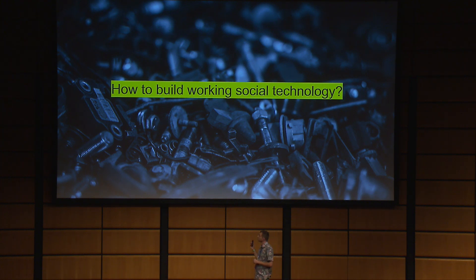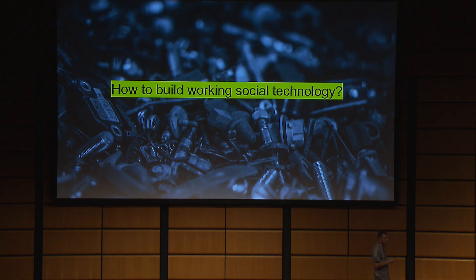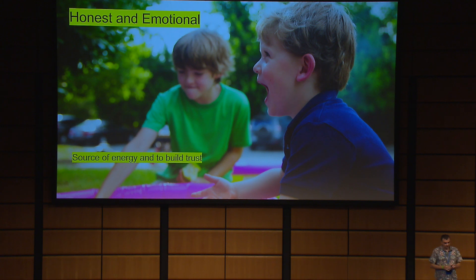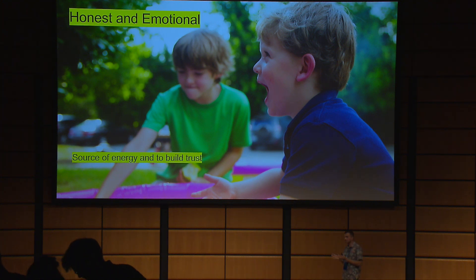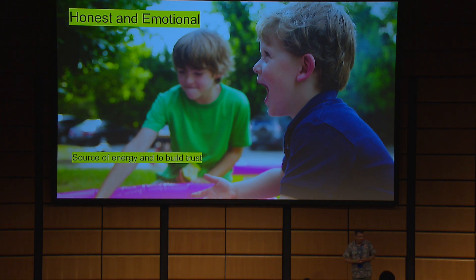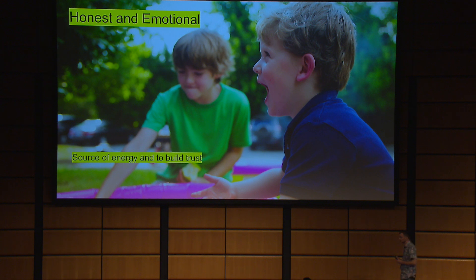This is why we have to build a technology that keeps this structure over time. And now I'll try to give some examples and tips on how to build a social technology that works over time. First of all, it should be emotional and honest, because we can't generate emotions without honesty. Emotions are our bridge to deeper motivations inside every team member, and this is the source of energy.